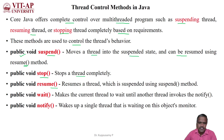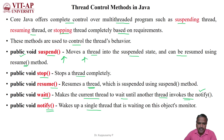The resume method is used to resume a suspended thread, which is very useful to continue the process of a currently suspended thread. The wait method is also used to make the currently running thread wait until another thread invokes the notify method. The notify method wakes up a single thread that is waiting for its turn in the object's monitor.